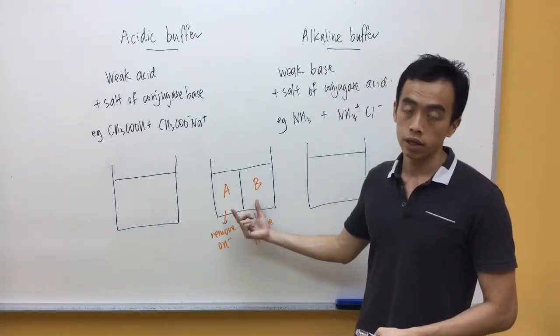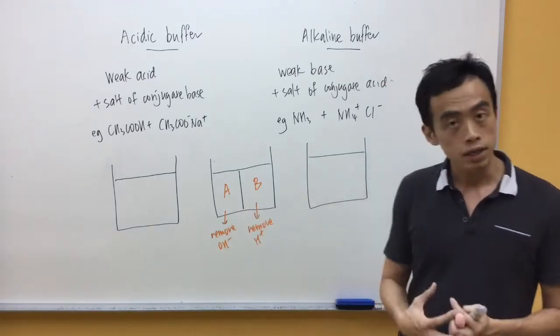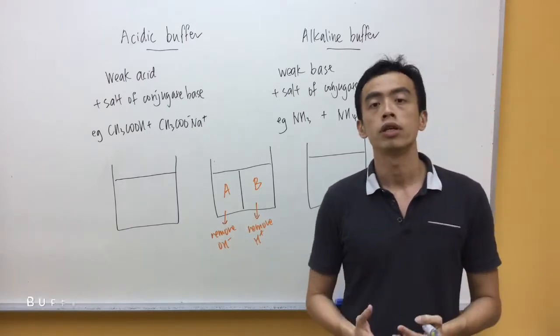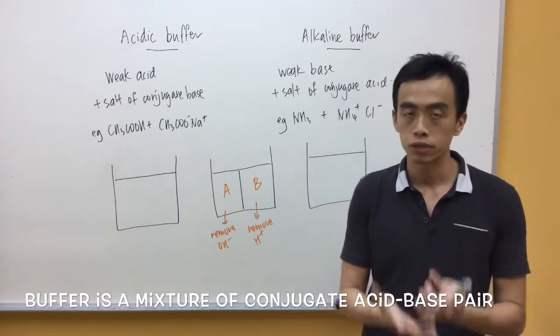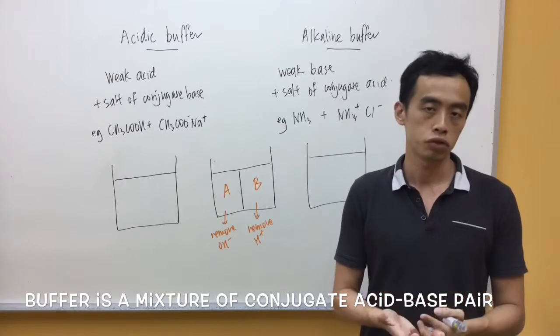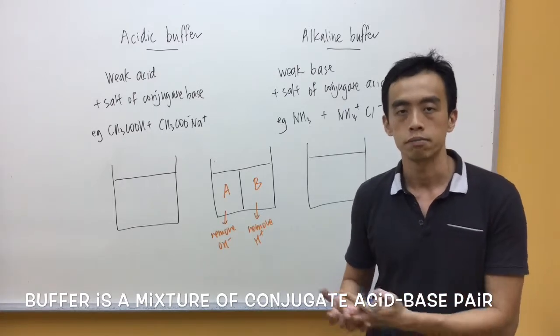Now, this acid and base inside this buffer, they are related to each other. They are a conjugate acid-base pair. So essentially, a buffer is just a mixture of a conjugate acid-base pair.